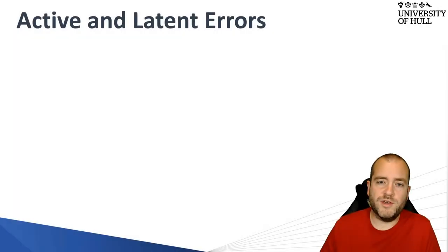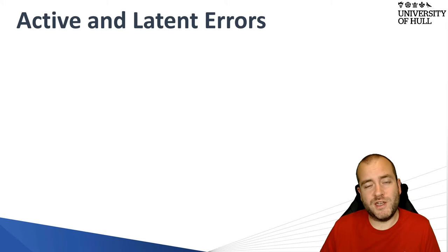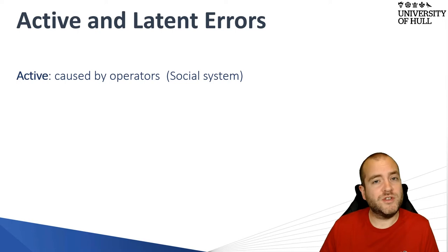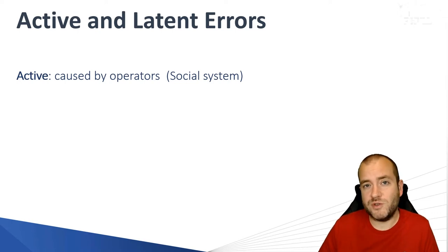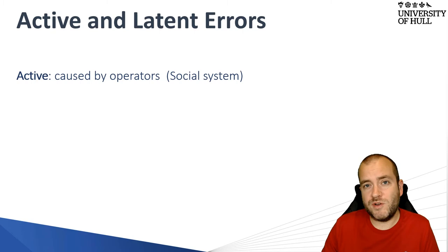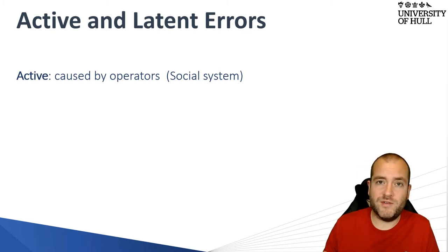When an error occurs, it can be classified as active or latent, and this relates directly to systems theory. Active errors are typically caused by operators acting within the social system — the interaction of people and groups, colleagues and patients. So an active error would involve these colleagues actually physically making the error, whether a cognitive error or a procedural error.